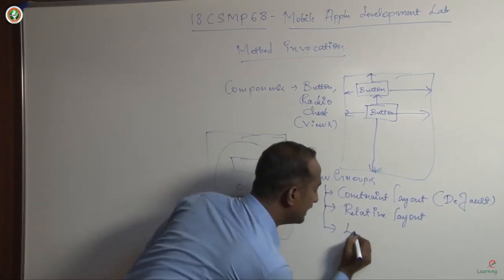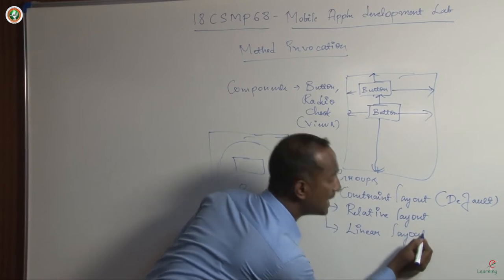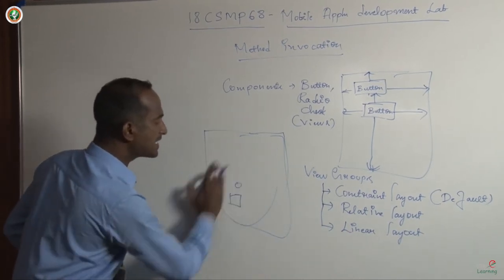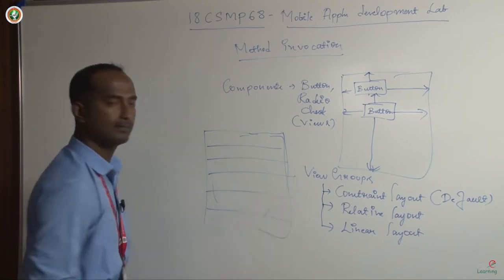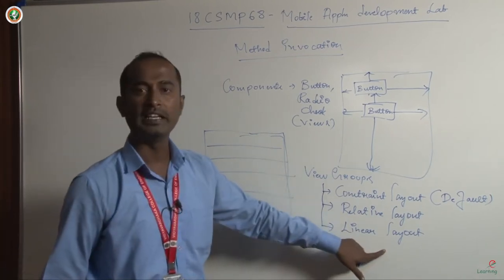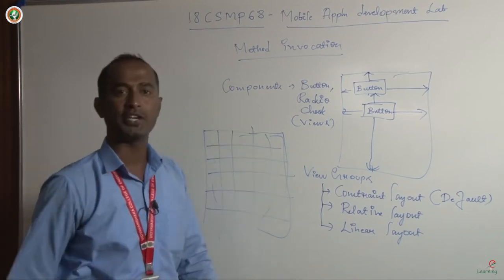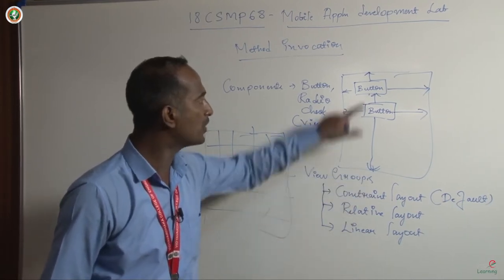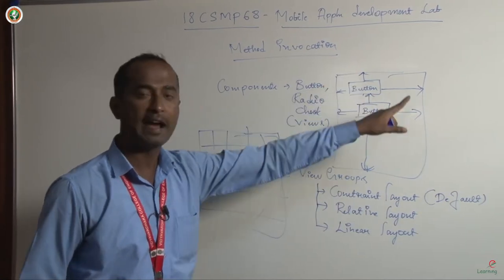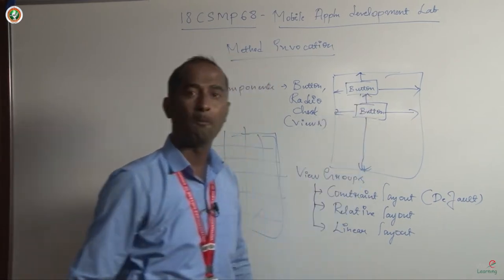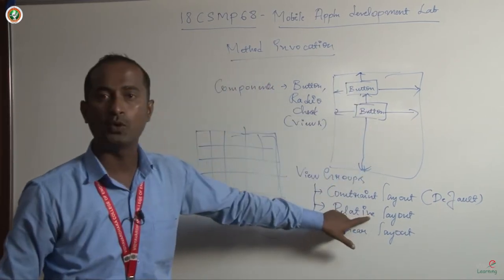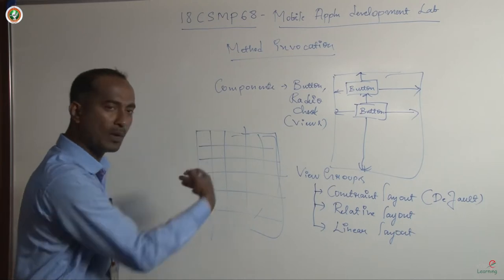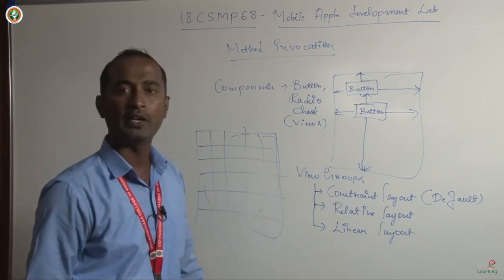The next one is linear layout. If you want the design in a one-to-one manner — like a ruled sheet — then we use linear layout. It may be either horizontal or vertical as per your application requirement. These are the three basic layouts: constraint layout requires setting constraints on all four sides; relative layout places components relative to previous ones; and linear layout arranges them in a one-to-one horizontal or vertical fashion.